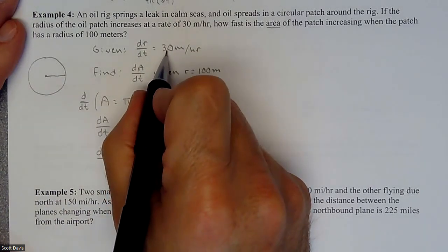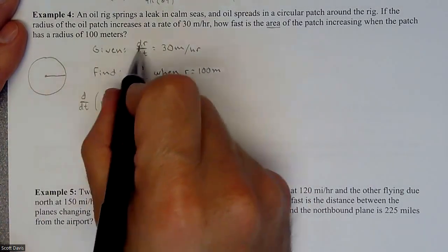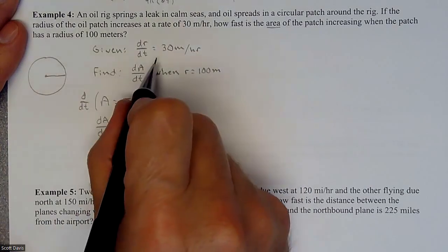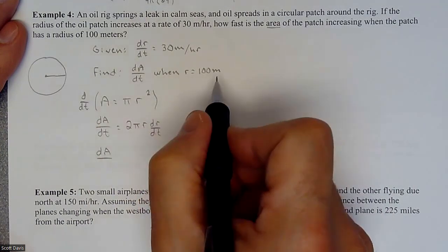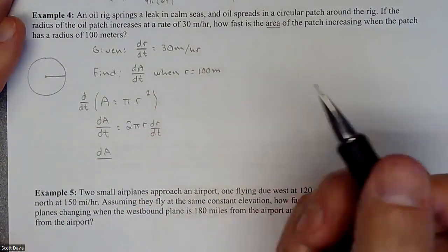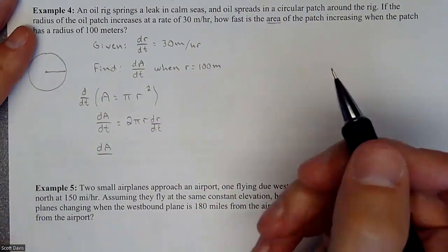Since this is expanding I'm going to make sure that I keep it as a positive. If it was shrinking then I would have this as a negative. But it's positive and our area should be positive. The rate at which the area is changing should be positive as well.